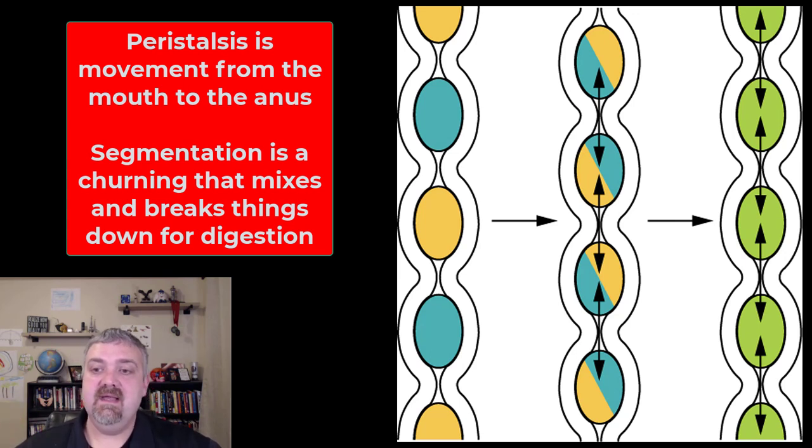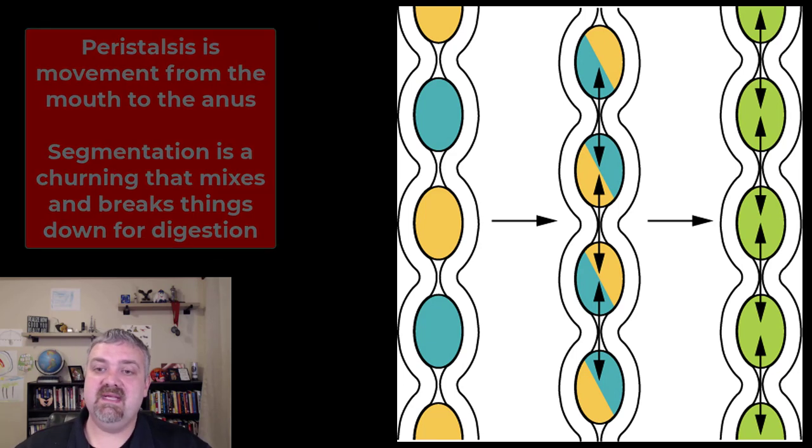So this mixing segmentation occurs the most in the duodenum, which is why I call it the mixing bowl of your small intestine. About 12 times a minute, these contractions occur, just continually churning and mixing things up.